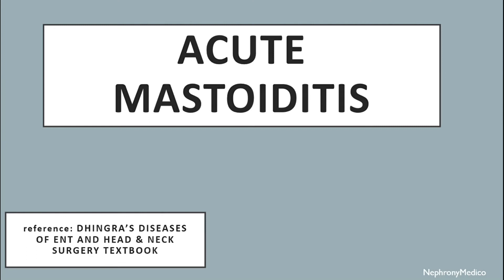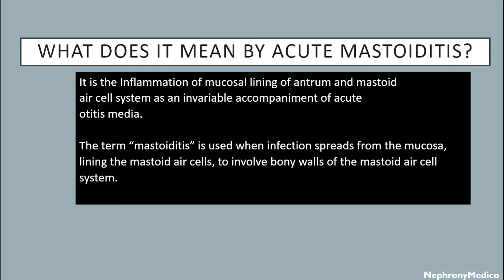Hello and welcome. Let's talk about acute mastoiditis. Acute mastoiditis is the inflammation of the mucosal lining of the antrum and mastoid air cell system, as an invariable accompaniment of acute otitis media. The term mastoiditis is used when infection spreads from the mucosa lining the mastoid air cells to involve the bony walls of the mastoid air cell system.